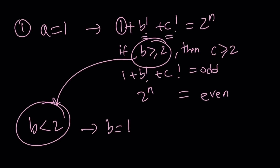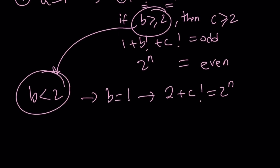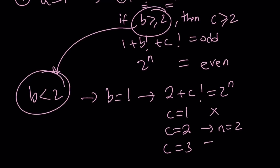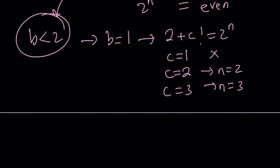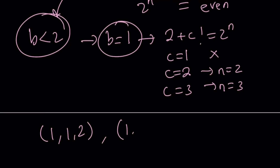With a equals 1 and b equals 1, our equation becomes 1 plus 1 plus c factorial equals 2 to the power n, so 2 plus c factorial equals 2 to the power n. If c equals 1, there are no solutions. If c equals 2, we get 2 plus 2 equals 4, so n equals 2. If c equals 3, we get 2 plus 6 equals 8, so n equals 3. So we get solution sets (1, 1, 2) and (1, 1, 3).